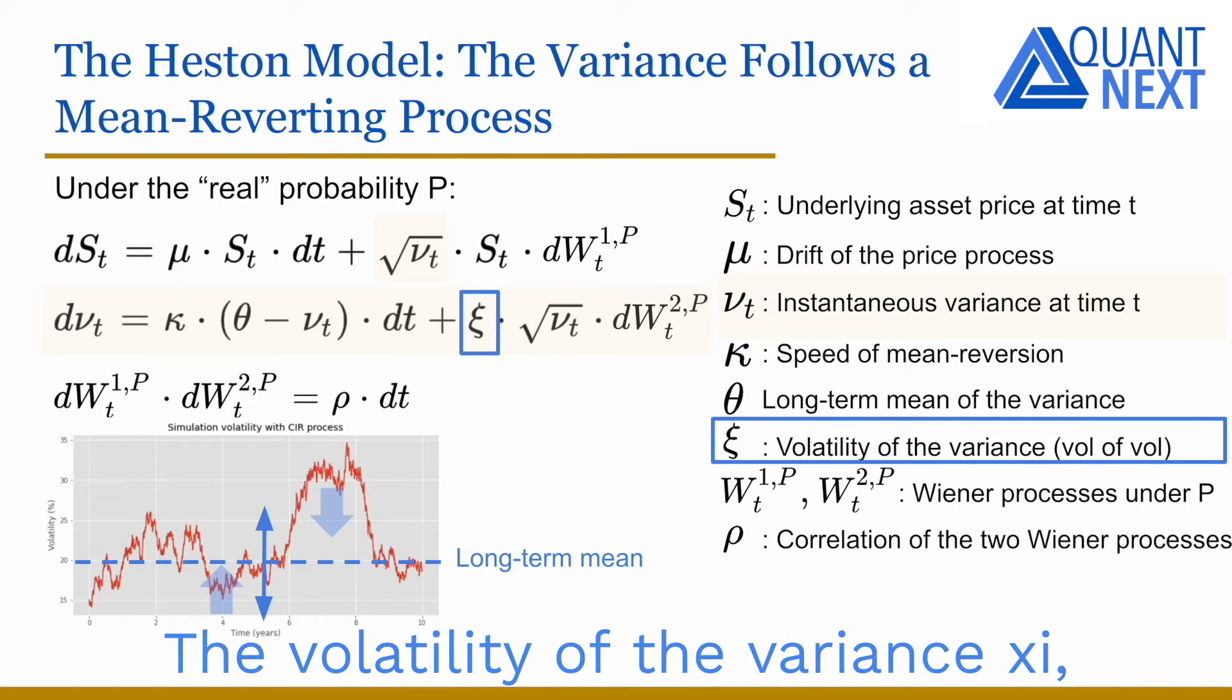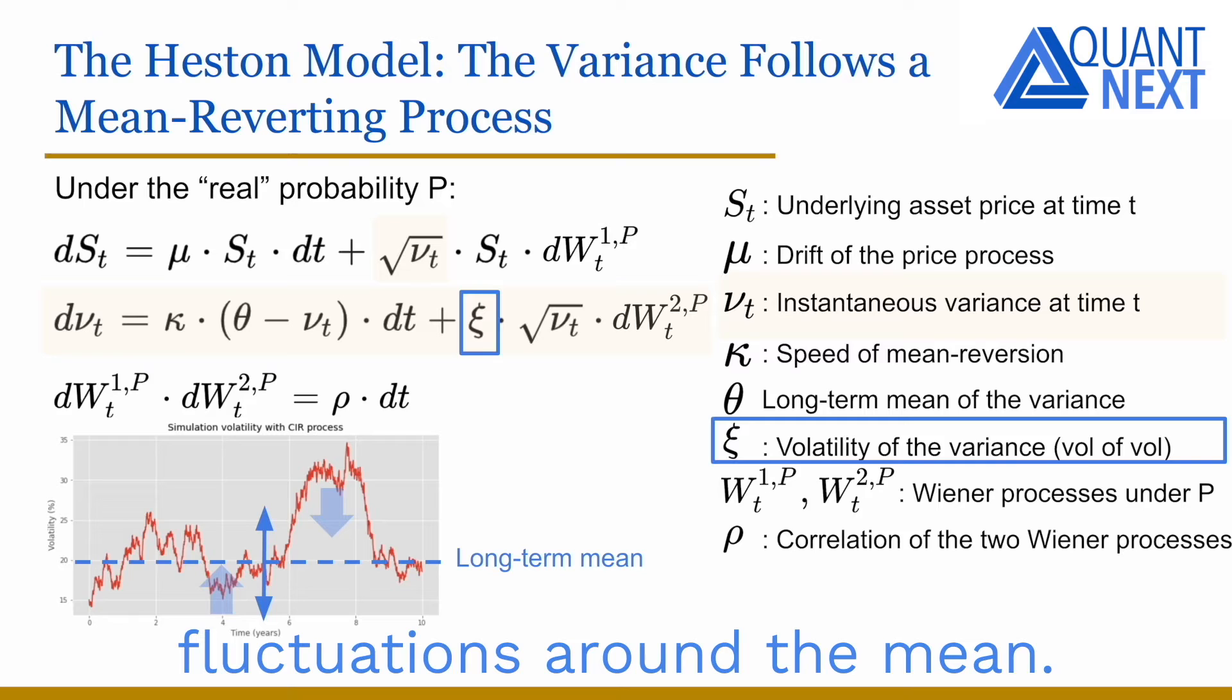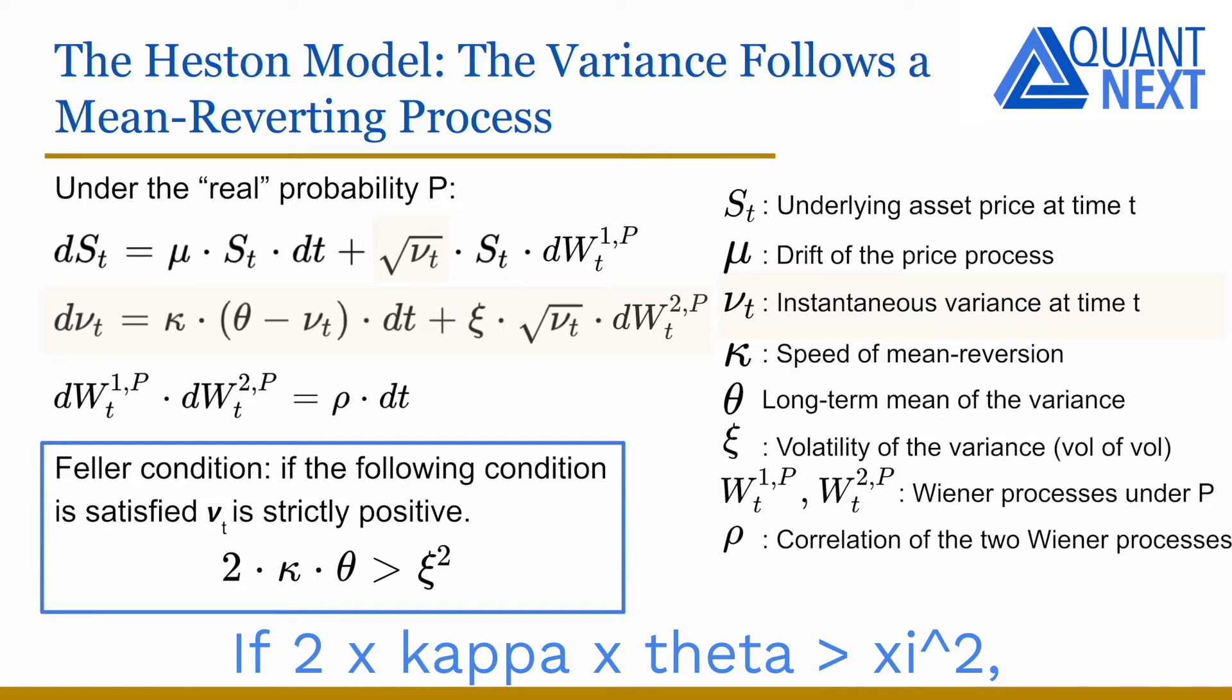The volatility of the variance Xi, also called vol of vol, controls the amplitude of the possible fluctuations around the mean. If 2 times kappa times theta is higher than the square of Xi, then the instantaneous variance is strictly positive. This is known as the Feller condition.